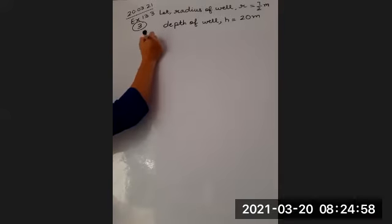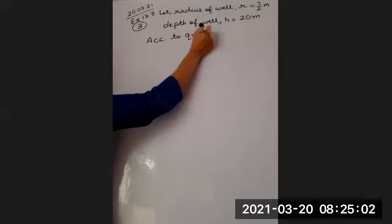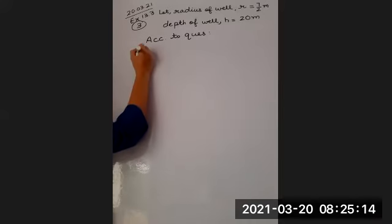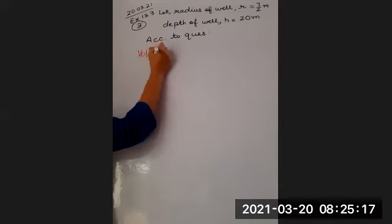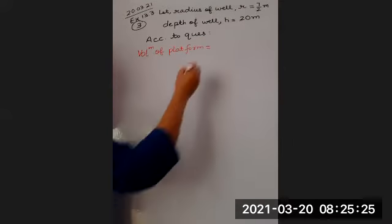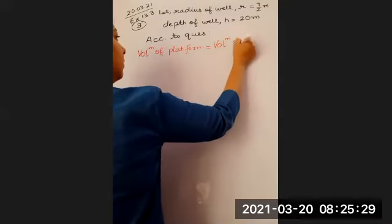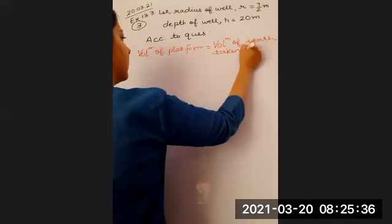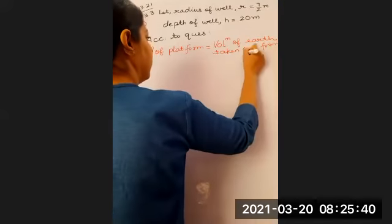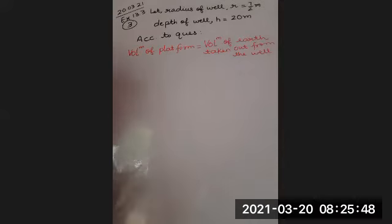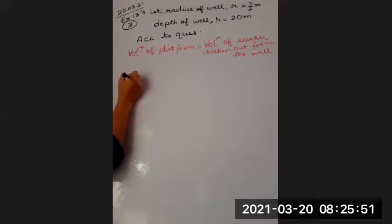Now according to question, the unknown is with platform or with the well? Platform. On the left side, the dimensions of platform, according to question: volume of platform is equal to volume of earth taken out from the well.